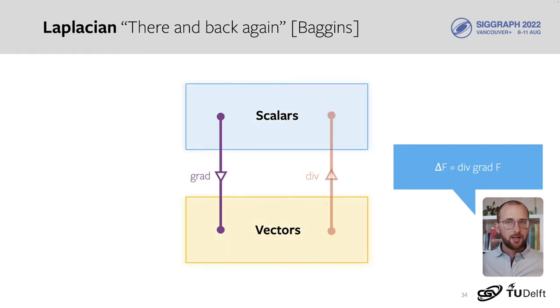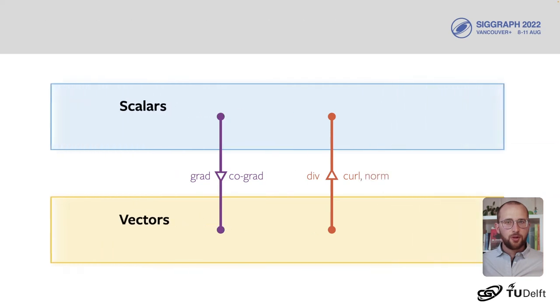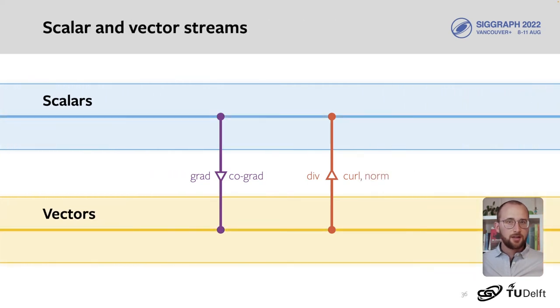For scalars, we go to vectors with gradient, and back again with divergence. For vectors, we go to scalars with divergence and curl, and back again with gradient and co-gradient. In our neural networks, we'll separate scalars and vectors into two streams that run throughout the network, and connect them with these operators.